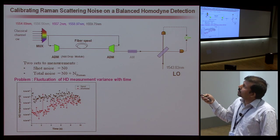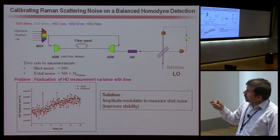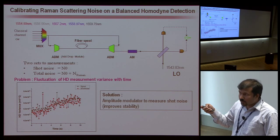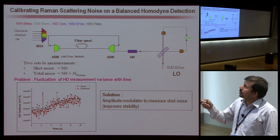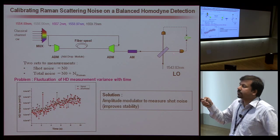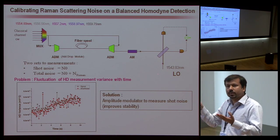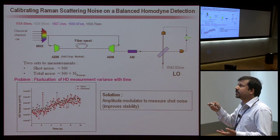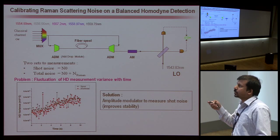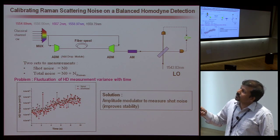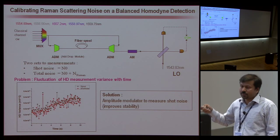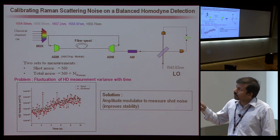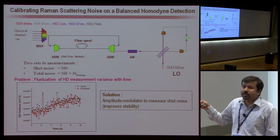We added an amplitude modulator to our setup. We switch off the amplitude modulator for one pulse — there's no transmission, so we can accurately measure the shot noise. Then we switch on the amplitude modulator so the signal goes through the homodyne detection and we measure total noise. This improves system stability because both shot noise and total noise measurements experience the same fluctuations, allowing us to correctly detect the Raman excess noise.